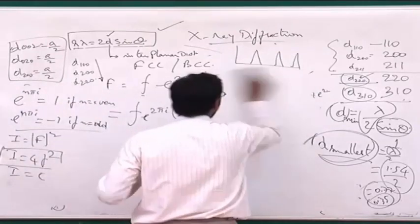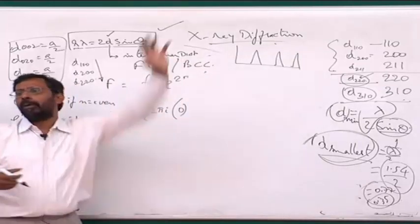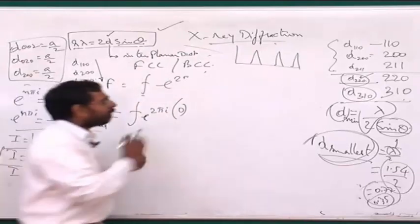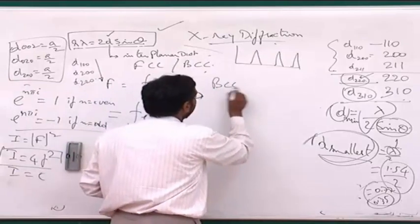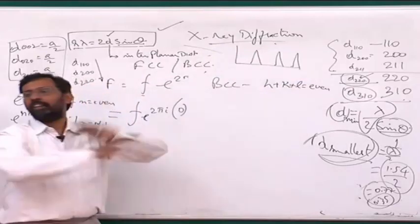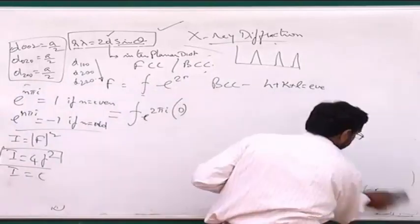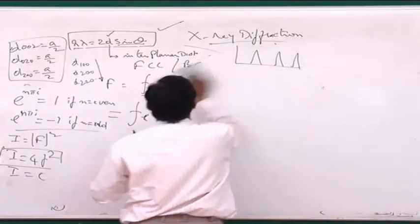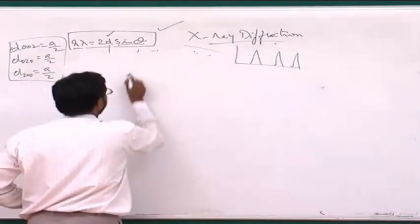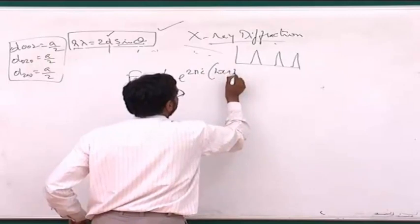So we have understood one key factor: you will not see all HKL peaks in an XRD pattern. You will only see some of them, and those are fixed by a particular condition. For BCC, the condition is H+K+L must be even; if odd, you will not see those peaks. Now let's do the same analysis for FCC, which is another popular crystal structure, using the same formula: F = f × e^(2πi(HX + KY + LZ)).